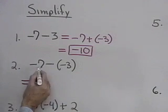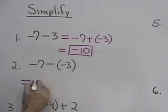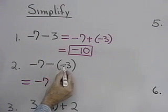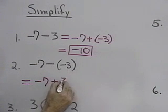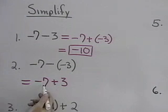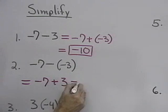So how about negative 7 subtract negative 3? That would be negative 7. Instead of subtracting negative 3, I'm going to add its opposite, positive 3. Now, negative 7 plus positive 3, that would be negative 4.